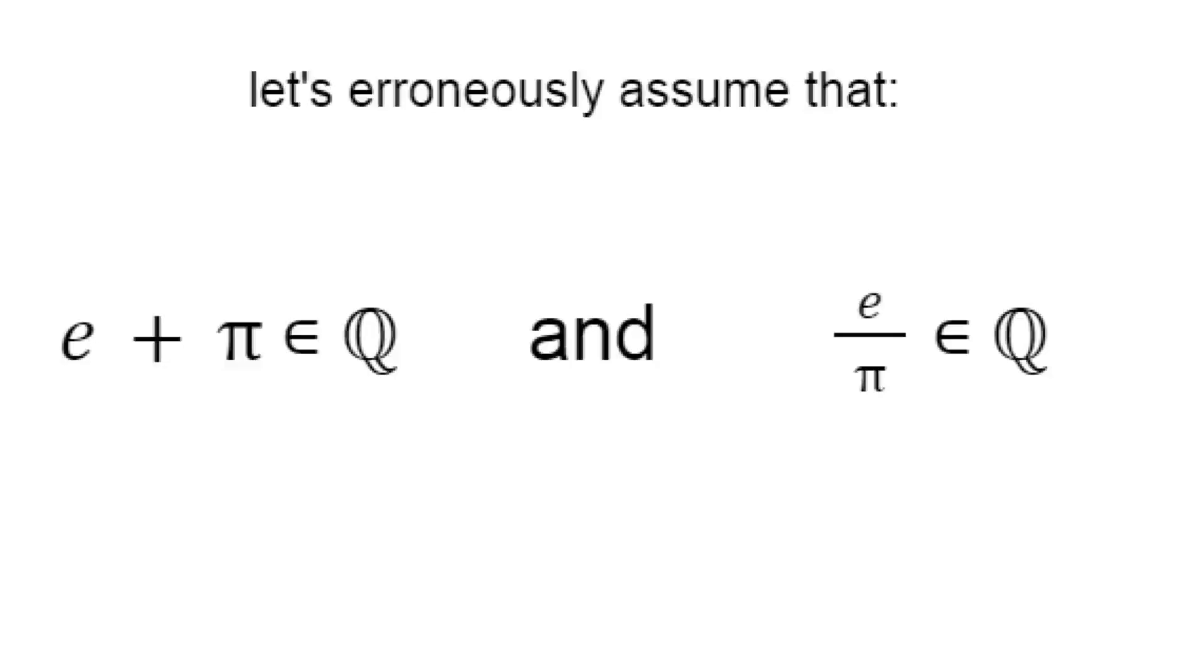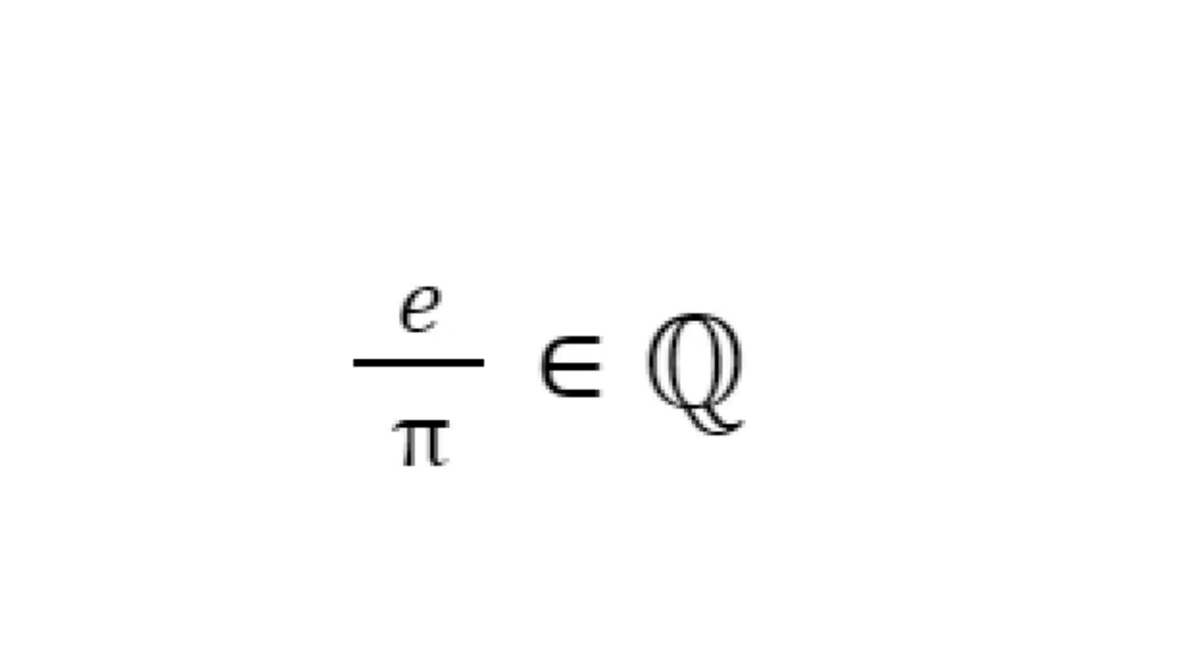Let's erroneously assume that e plus pi and e divided by pi are both rational. The assumption that e divided by pi is rational leads us to conclude that e and pi are linearly dependent in Q, which means there exists a rational number lambda such that lambda times e is equal to pi.